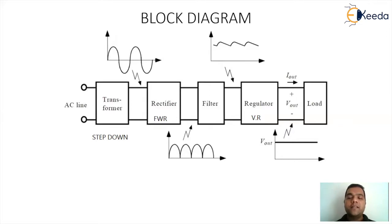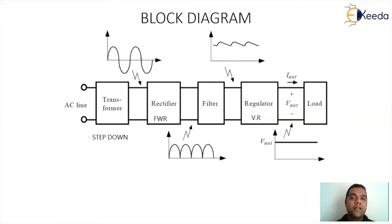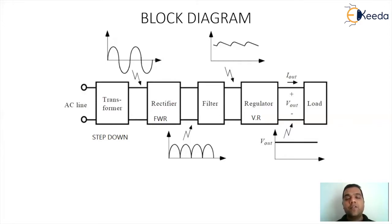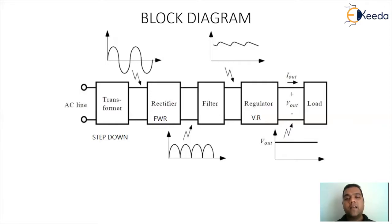The voltage regulator automatically stabilizes the output voltage given to the load, ensuring there is no impact due to variations of external parameters or line variations. The load will get a constant, stable voltage, and the devices will not be damaged. This is the basic purpose of a voltage regulator — to keep the output voltage constant so that load devices are safe from voltage fluctuations.